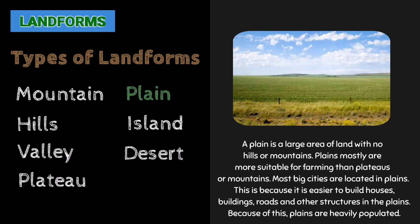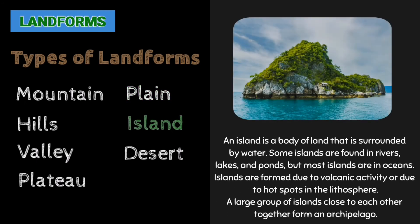A plain is a large area of land with no hills or mountains. Plains are mostly more suitable for farming than plateaus or mountains. Most big cities are located in plains because it is easier to build houses, buildings, roads, and other structures there — and because of this, plains are heavily populated. An island is a body of land surrounded by water. Some islands are found in rivers, lakes, and ponds, but most islands are in oceans. Islands are formed due to volcanic activity or hotspots in the lithosphere. A large group of islands close to each other forms an archipelago.